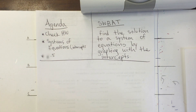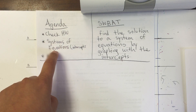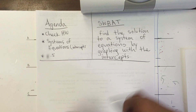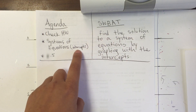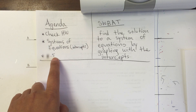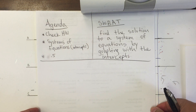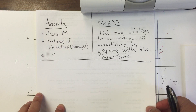Hello students. Today's agenda is to check your homework. We're going to be solving systems of equations again, but we're going to use graphing the intercepts, and your assignment will be 5.5. Today students will be able to find the solution to a system of equations by graphing with the intercepts, meaning the x and the y intercepts.